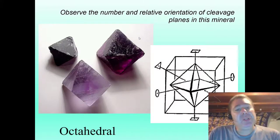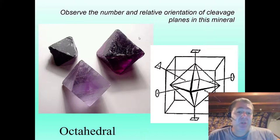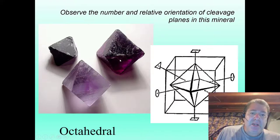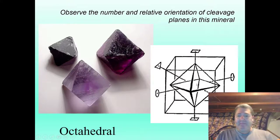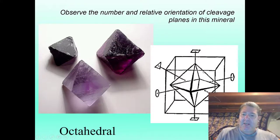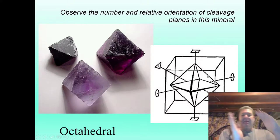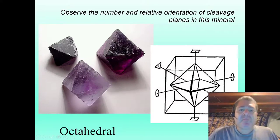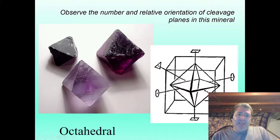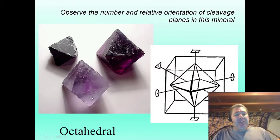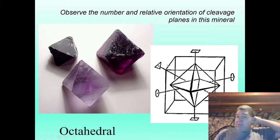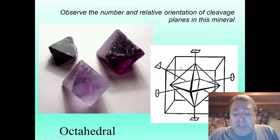The last cleavage type we'll look at is octahedral cleavage — four directions of cleavage. We have one, two, three, four directions reflected in the mineral. Octahedral cleavage makes triangle shapes. So if you see variations on triangles and octahedrons — which are these double pyramid shapes — that is telling you there are four directions of cleavage.